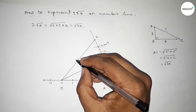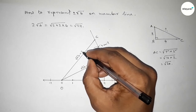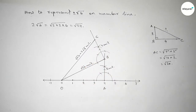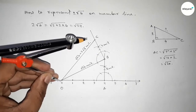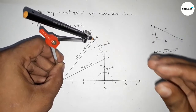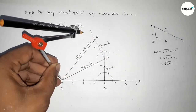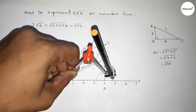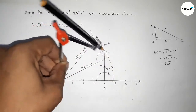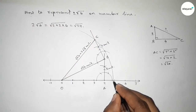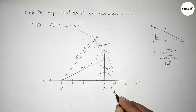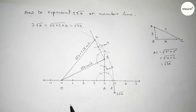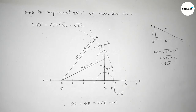By Pythagoras theorem, the hypotenuse OC equals √24, which equals 2√6 units. Take the length OC using a compass and draw an arc on the number line. It intersects at point P. Therefore, distance OC and OP equals 2√6 units. That's all — thanks for watching! If this video is helpful, please share it.